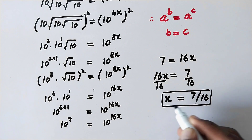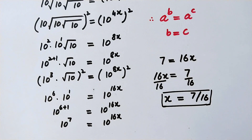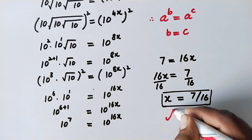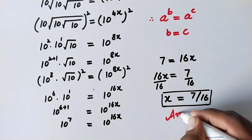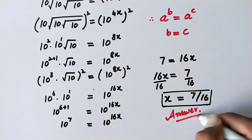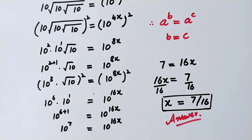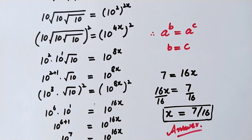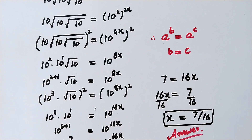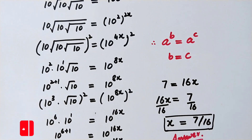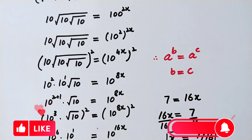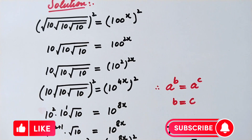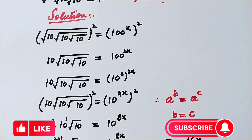By dividing both sides by 16, x is equal to 7 over 16, and that is the value of x — our final answer. I hope you would have liked the video. If you liked the video, please like and subscribe to my channel. Thanks for watching, take care, bye.